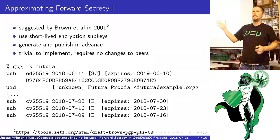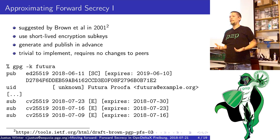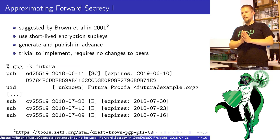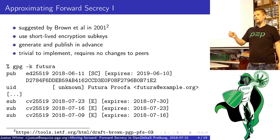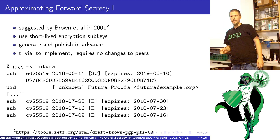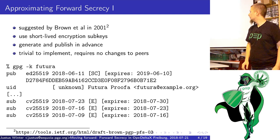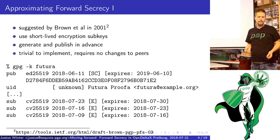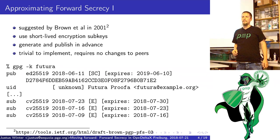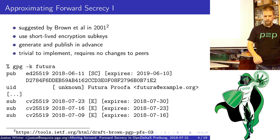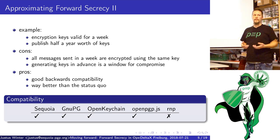In 2001, a group of people around some Mr. Brown came up with the idea of how to approximate forward secrecy in OpenPGP. The idea is quite simple: you generate short-term encryption subkeys. You can generate them in advance and then implementations can pick the appropriate key. It requires very little changes to existing implementations. This is a key I generated. At the top, you see the primary key — it's the cryptographic identity. Then some user IDs, and then there are encryption subkeys each valid for a week.